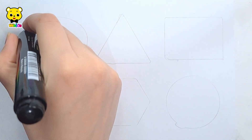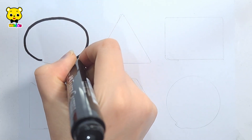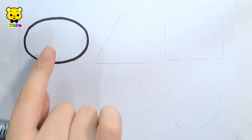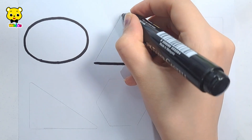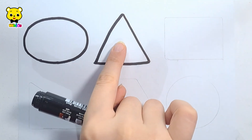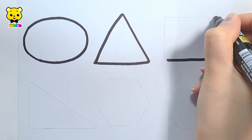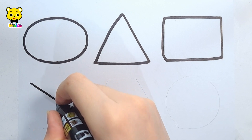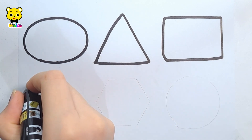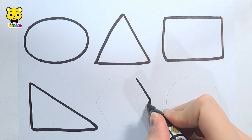Let's learn to draw some 2D shapes. Oval, triangle, rectangle, right triangle, hexagon.